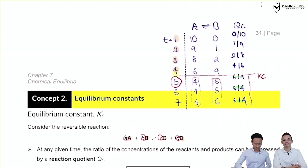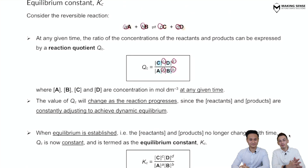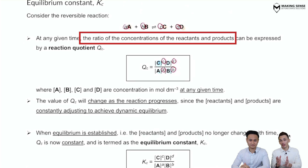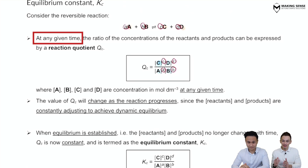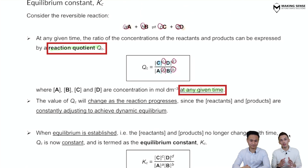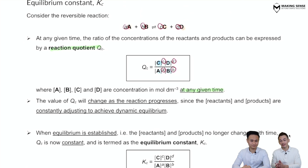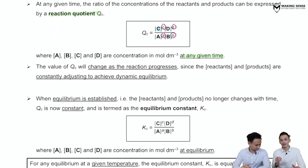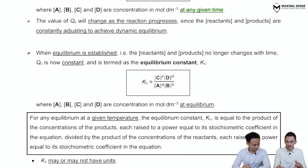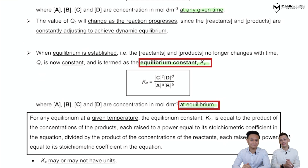The main difference between Qc and Kc really lies in the definition. Qc is the ratio at any given time interval — equilibrium may or may not have been established yet. But once equilibrium has been established, we rebrand Qc as Kc. Kc is the ratio specifically at equilibrium. That's the main difference between these two.